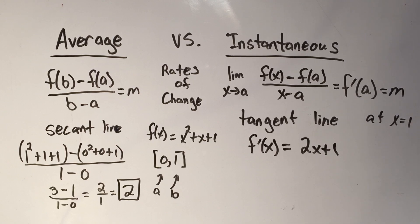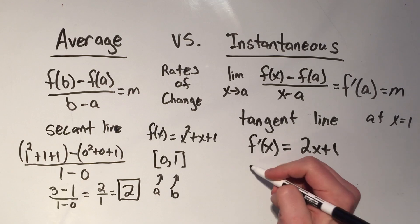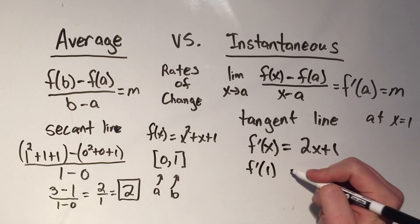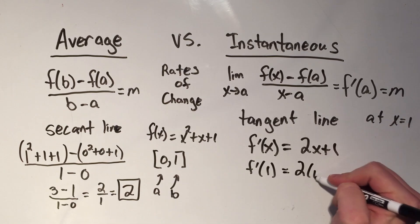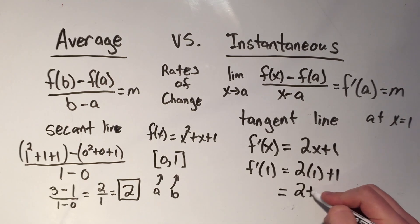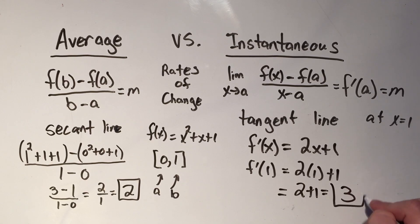If I want the instantaneous rate of change at x equals one, or at one, I'll just plug one into the function. So that'll be two times one plus one. That's going to be two plus one is three. That's the instantaneous rate of change at one.